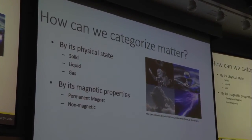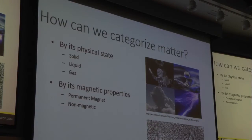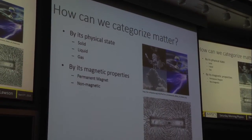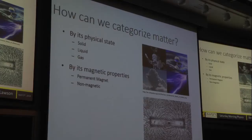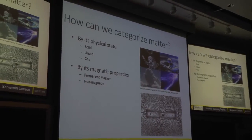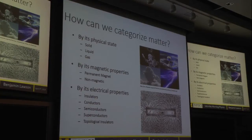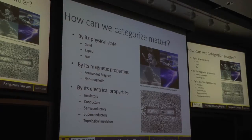We can also categorize matter by its magnetic properties. Many people are familiar with permanent magnets — here's a picture of a bar magnet with some iron filings that line up with the magnetic field. Other materials are not magnetic at all. We can also categorize matter by their electrical properties: some materials are conductors, others are insulators, and there are various other types in between. This talk will focus on this way of categorizing matter.